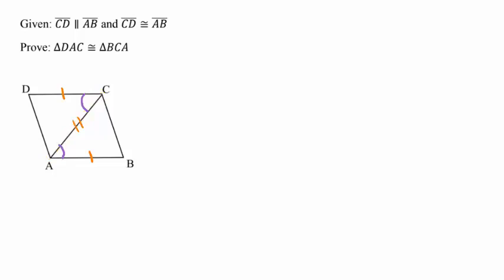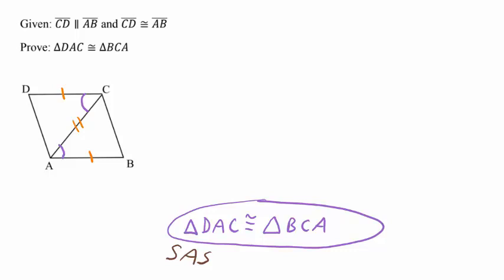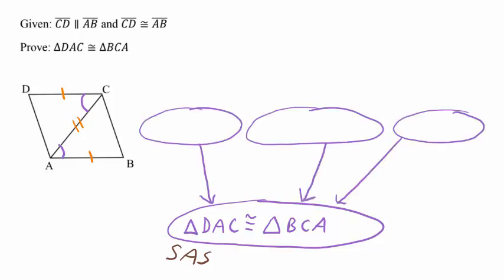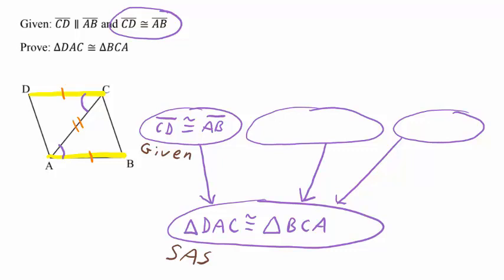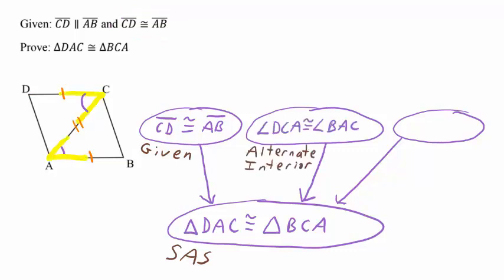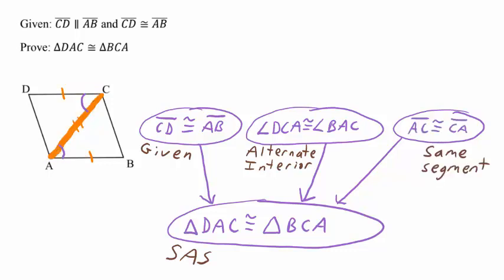When doing a flowchart proof, I like to start with the conclusion, but you don't have to. In this case, triangle DAC is congruent to triangle BCA because of side, angle, side. Now I'm going to write my three statements for the three pairs of congruent parts. My first pair of congruent parts will be a pair of sides: CD is congruent to AB because that was given information. Now the pair of congruent angles: angle DCA is congruent to angle BAC because those are alternate interior angles. And one last statement for the second pair of congruent sides: line segment AC is congruent to itself — we can say they're the same segment, or write reflexive property.